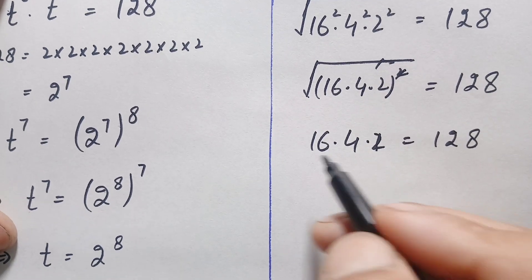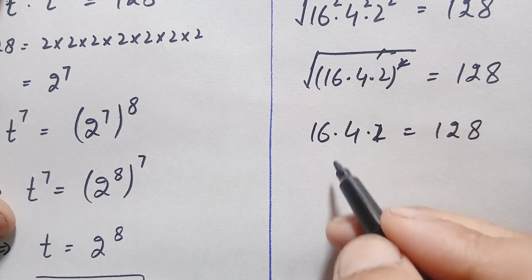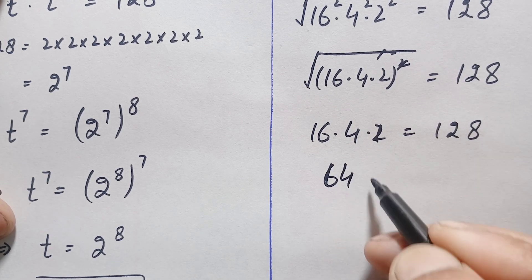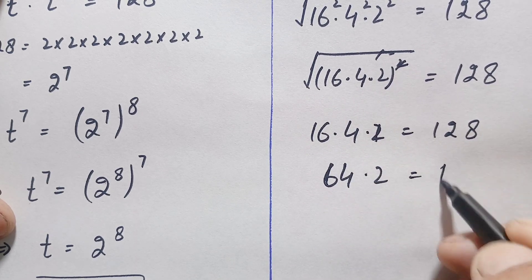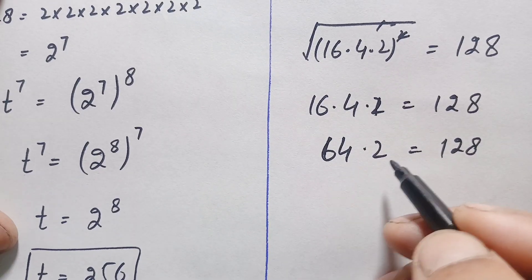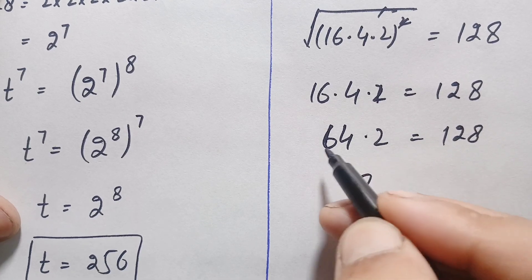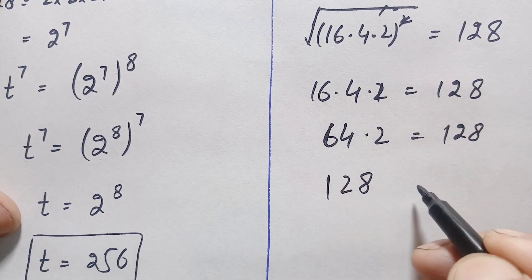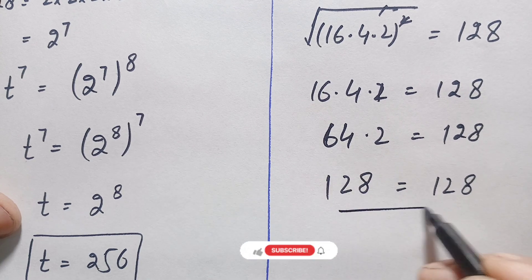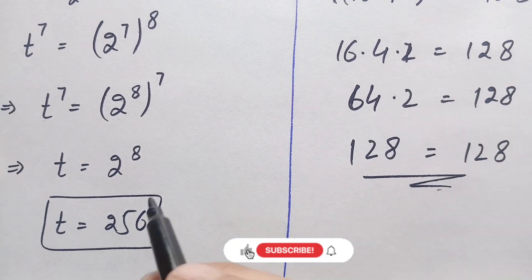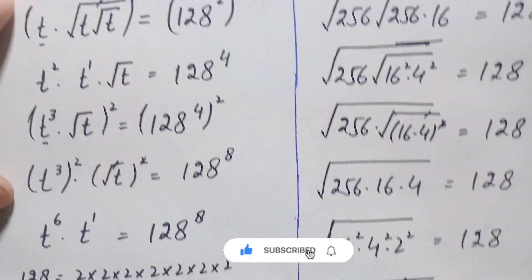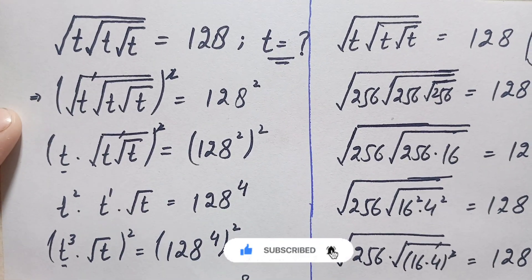So this becomes 16 times 4 times 2 is equal to 128. Multiplying: 16 times 4 is 64, and 64 times 2 is 128. Since both sides equal 128, this confirms that t equals 256 is the exact and correct value of t in this interesting square root and radical math problem.